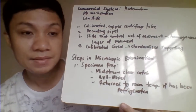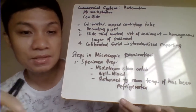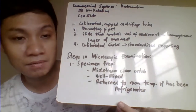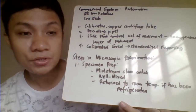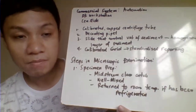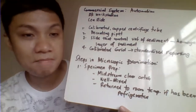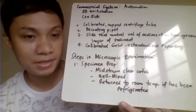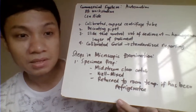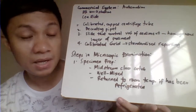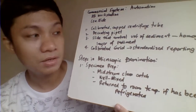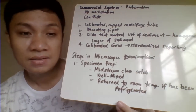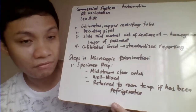The automated instrument performs identification of our sediments — it's not you as a medtech identifying them under the microscope. However, when automated instruments have errors, they flag them, meaning you still need to manually check. You still need to verify flagged results manually.